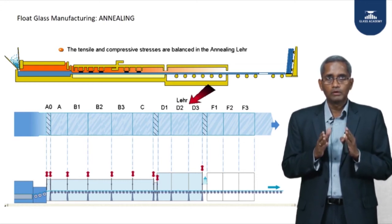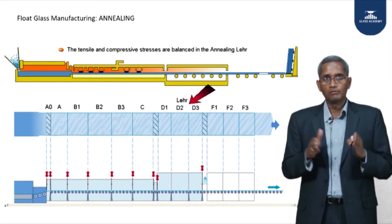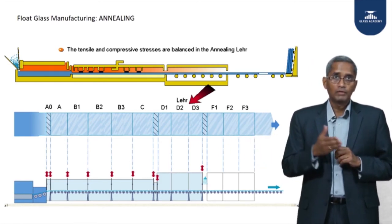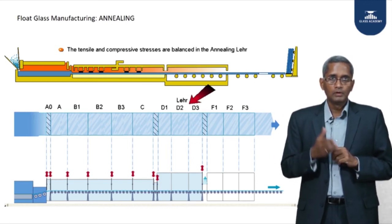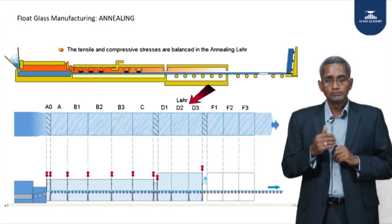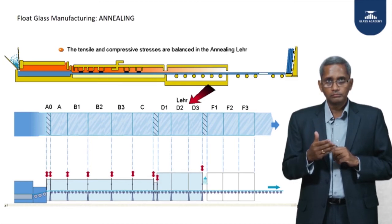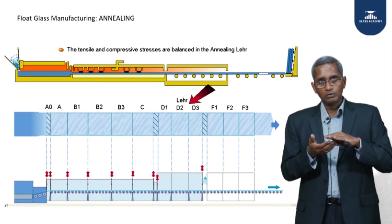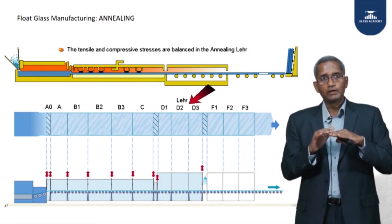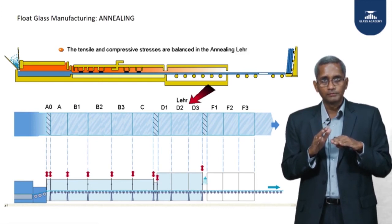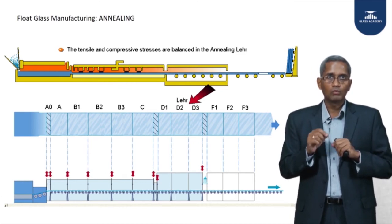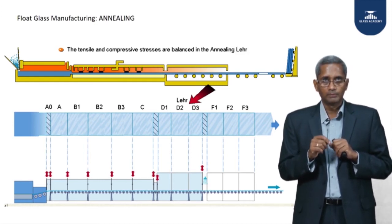That is why there is a very long B zone — in larger furnaces with 1000-ton capacity it can extend to B1, B2, B3, and B4 — with a very slow rate of cooling. Slow cooling is needed because the glass travelling on rollers cools differently at the top, bottom, and centre. The surface and centre always cool at different rates, so some stress is unavoidable; all we can do is reduce the stress as close to neutral as possible.